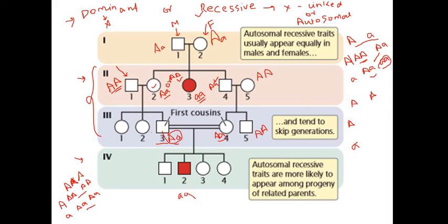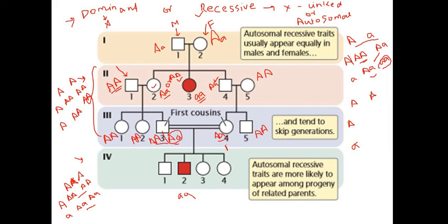When individuals 1 and 2 from generation 1 get married and have three children, if both parents are normal — genotype AA — all children will have normal phenotype with genotype AA. Similarly for individuals 4 and 5, where one person comes from outside the family, if both have genotype AA, then using a Punnett square we find all children have normal phenotype and normal genotype.